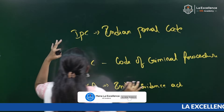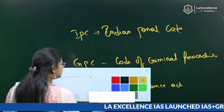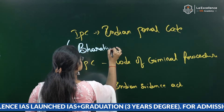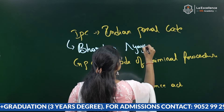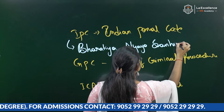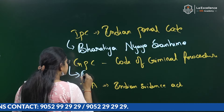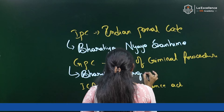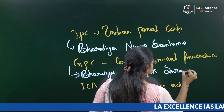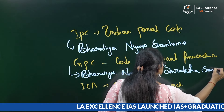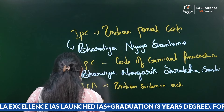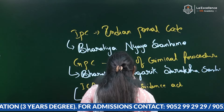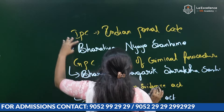Now these three are going to be replaced. IPC is going to be replaced by Bharatiya Nyaya Sanhita. CrPC is going to be replaced by Bharatiya Nagarik Suraksha Sanhita. And the Indian Evidence Act is going to be replaced by the Bharatiya Saksha Act. These are the three replacements.